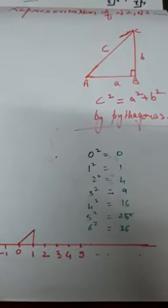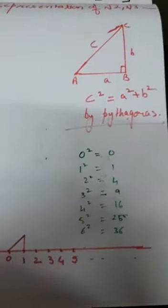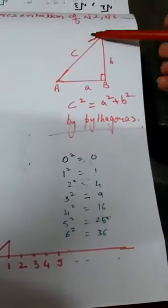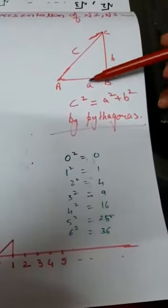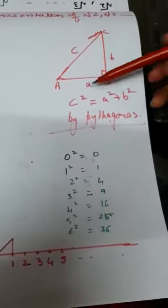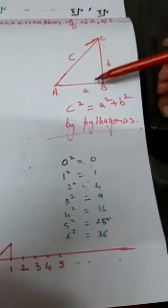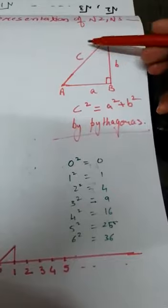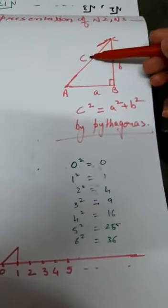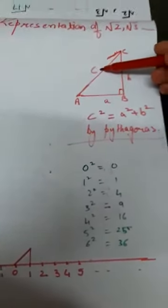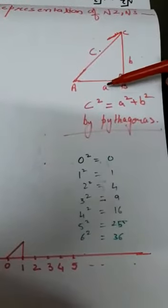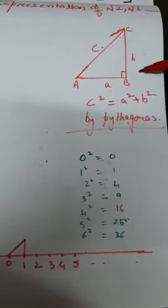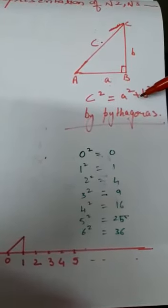Now see that you all know the Pythagoras theorem. Pythagoras theorem says that when we have a right angle triangle ABC and this is our base A, this is our perpendicular B and this is the length, if we want to find the length C, C square is equal to A square plus B square. This is our Pythagoras theorem. Now let's move how to represent the root numbers on number lines.